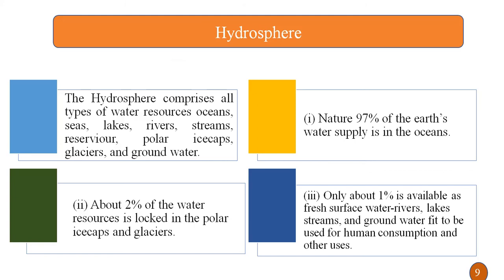The next component of the environment is the hydrosphere. The word 'hydro' itself indicates it is related to water. The hydrosphere comprises all types of water resources such as oceans, seas, lakes, rivers, streams, reservoirs, polar ice caps, glaciers and groundwater. About 97% of the earth's water supply is in the oceans, about 2% is locked in polar ice caps and glaciers, and only 1% is available as fresh water in the form of rivers, lakes, streams and groundwater — which is fit for human consumption and other uses.